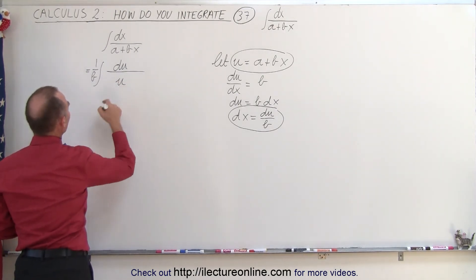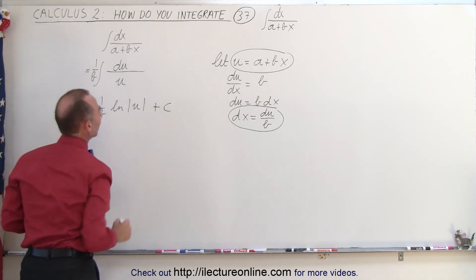The integral of that will be the natural log, so this becomes 1 over b times the natural log of u plus a constant of integration.